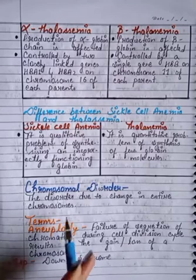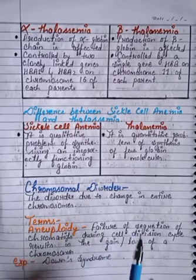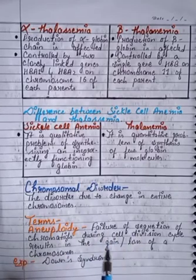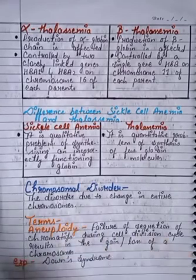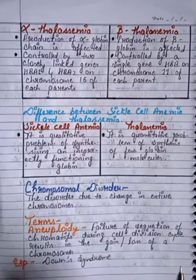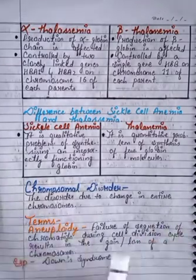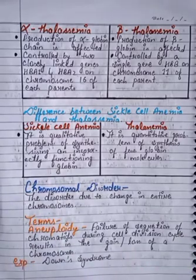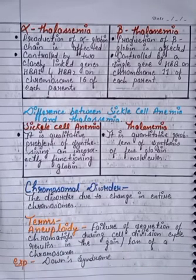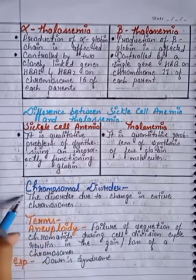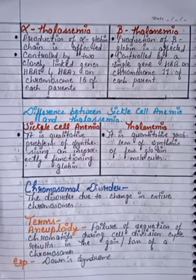Now, what is a chromosomal disorder? A disorder due to a change in an entire chromosome is called a chromosomal disorder. In a genetic disorder only one gene is changed, but in a chromosomal disorder the entire chromosome is affected.